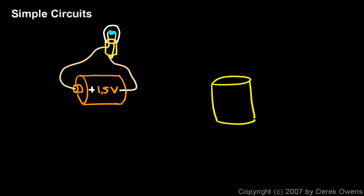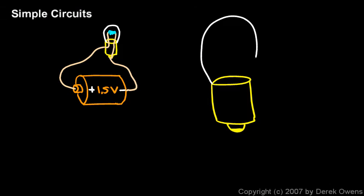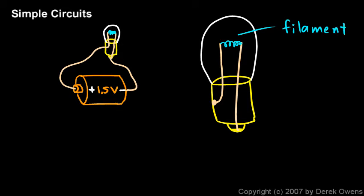Let's draw the bulb a bit larger so you can see what's going on inside. The bottom part typically screws into a socket made of metal, and the globe up here is made of glass so the light can get out. Inside the bulb, one wire is connected to the side and runs up, and another wire is connected to the bottom and runs up. In between there's a thin wire coil called the filament, and that's where all the light is produced. One wire has to touch the metal side and one has to touch the bottom, so electrons flow in one wire, up through the filament, and down the other wire and back out.